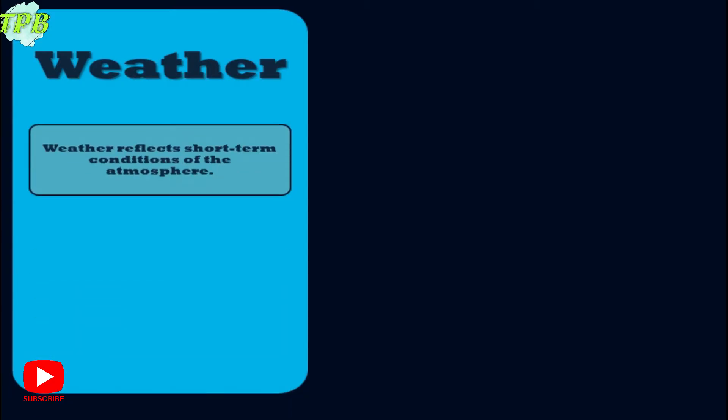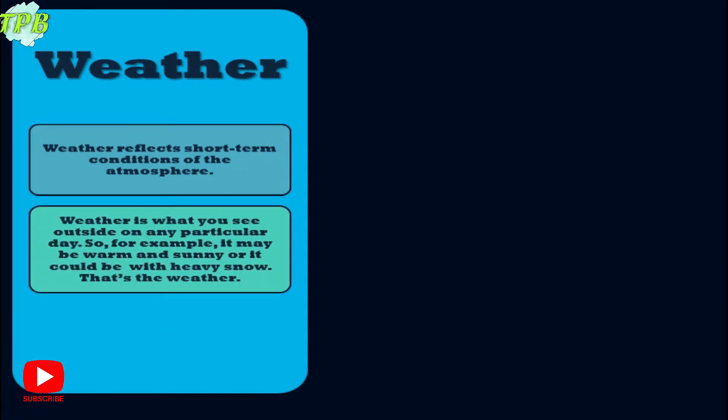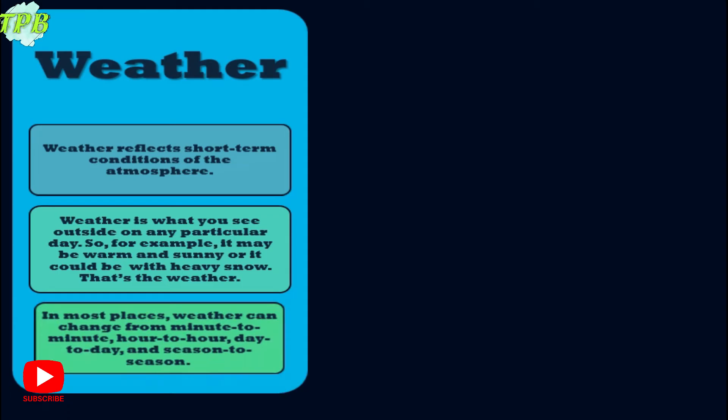Before starting the climatic zones, we must understand the difference between weather and climate. Weather reflects short-term conditions of the atmosphere. In simpler words, weather is what you see outside on any particular day. For example, it may be warm and sunny, or it could be with heavy snow on any other day. In most places, weather can change from minute to minute, hour to hour, day to day, and season to season.